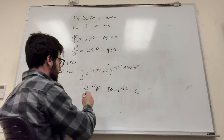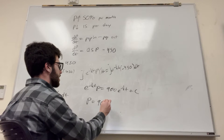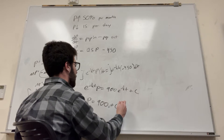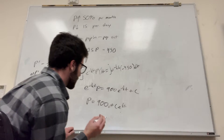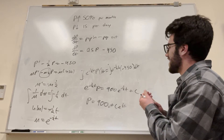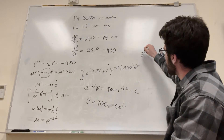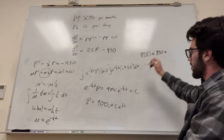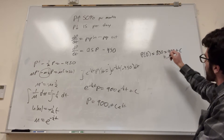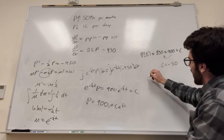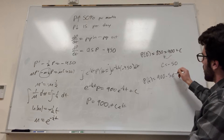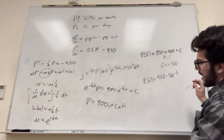Dividing both sides by e^(-t/2), the exponentials cancel: P = 900 + C·e^(t/2). That's our general solution. Applying the initial condition P(0) = 850: 850 = 900 + C, so C = -50. Our particular solution is P = 900 - 50·e^(t/2).